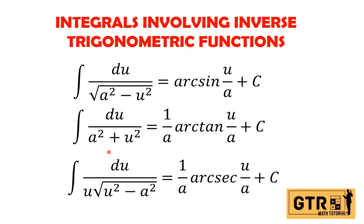We have three direct formulas for this integral. First, the integral of du over the square root of a squared minus u squared, where a is a constant, equals arcsin(u/a) + c. Second, the integral of du over a squared plus u squared equals (1/a) arctan(u/a) + c. Third, the integral of du over u times the square root of u squared minus a squared equals (1/a) arcsec(u/a) + c. Those are our three formulas that lead to inverse trigonometric functions.